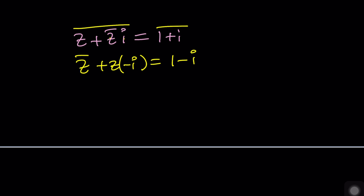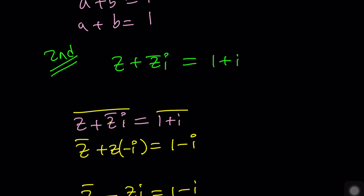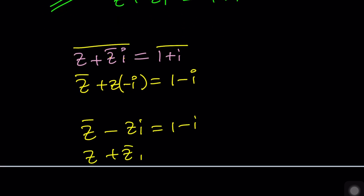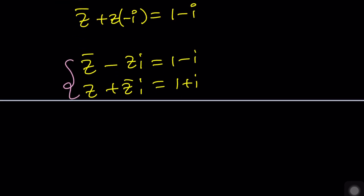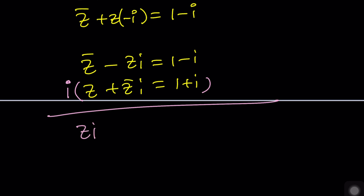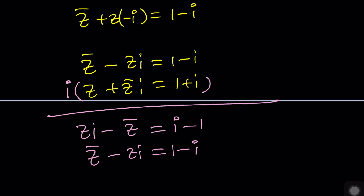The second equation is Z̄ minus Zi equals 1 minus i, and the first is Z plus Z̄·i equals 1 plus i. To eliminate Z, multiply everything in the second equation by i: Zi, then i squared gives negative 1, so Z̄·i minus Z·i² gives Z̄·i plus Z. The resulting modified second equation is Z̄·i plus Z equals i minus 1.